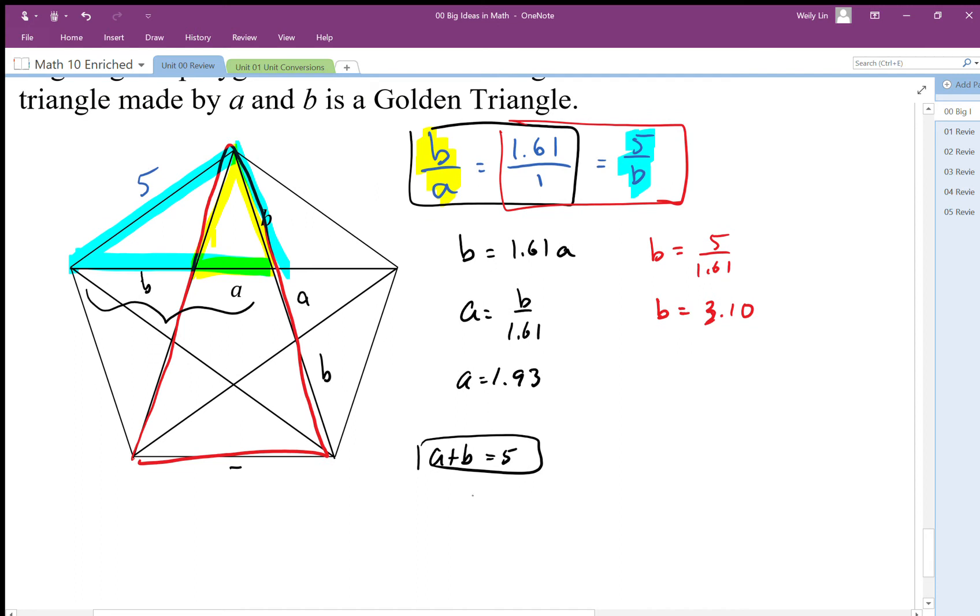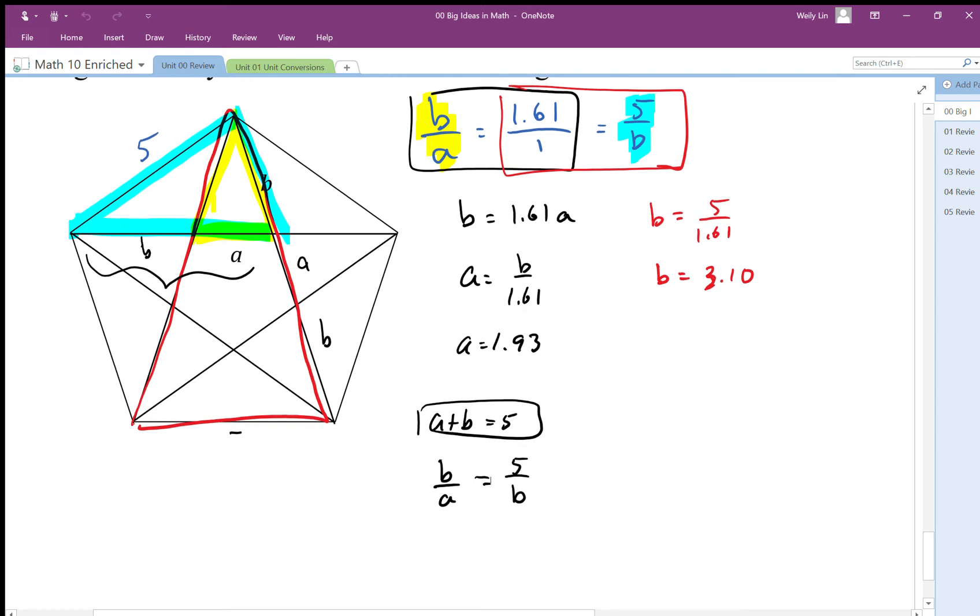We can say that b to a, the long to short in the yellow triangle, is equal to the long to short in the bigger blue triangle. In fact, I'm not going to use this red triangle, just going to use the yellow and blue. There's my yellow triangle, this is the long to short on my blue triangle.